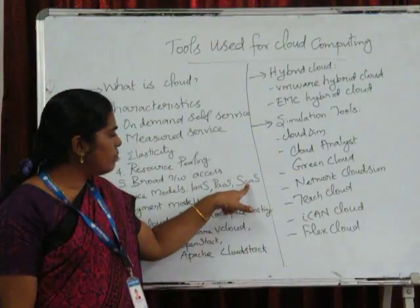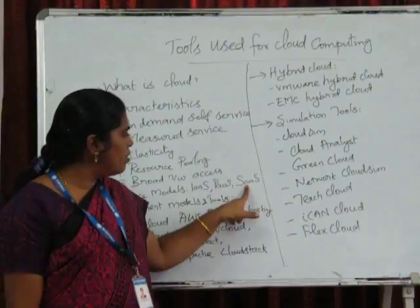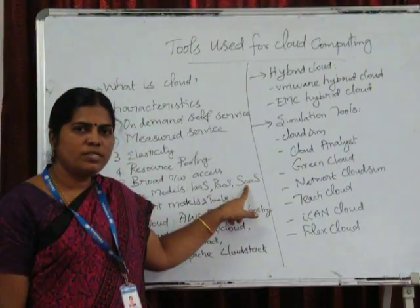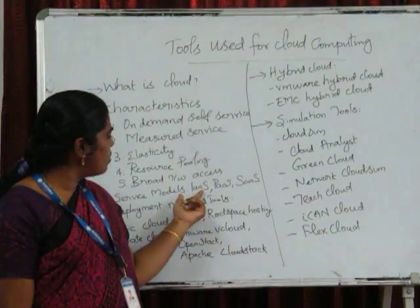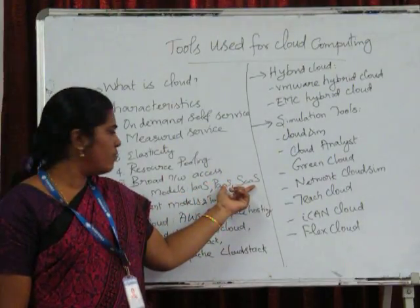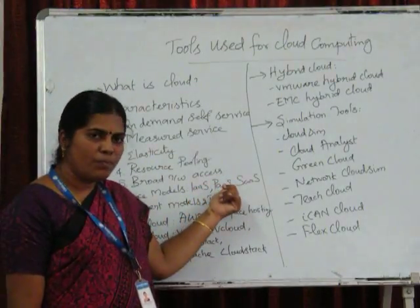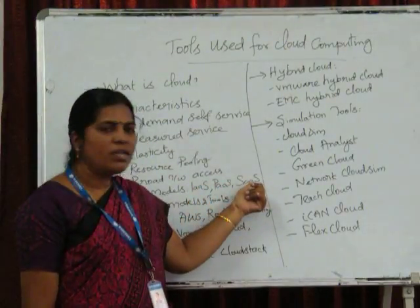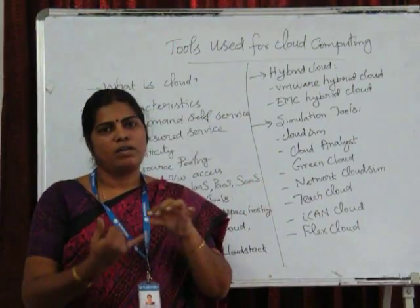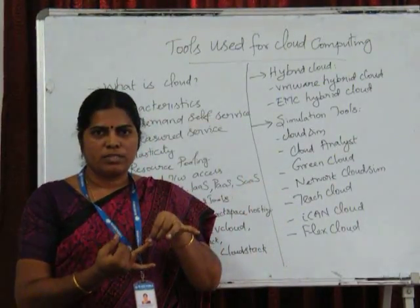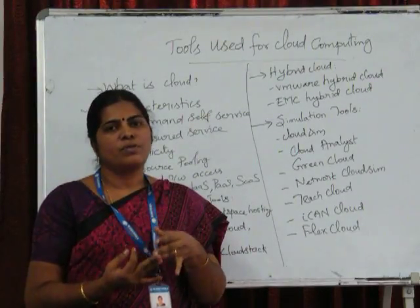Next one is software as a service. If you are going to procure software as a service, this is the third level. We must cross all these two services before the third level — that is IaaS, then PaaS, then software as a service. That is, we are procuring for hardware, operating systems, or the runtime environment, and then only we are looking for applications or any business process.